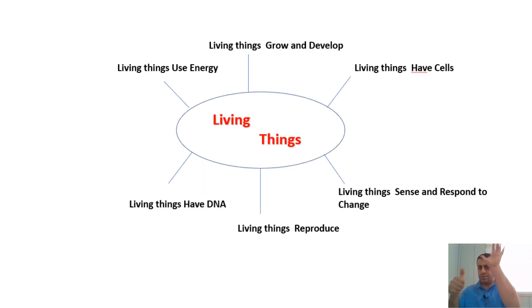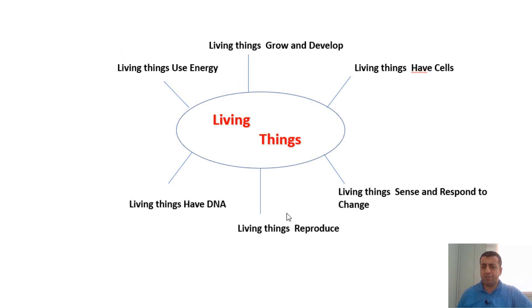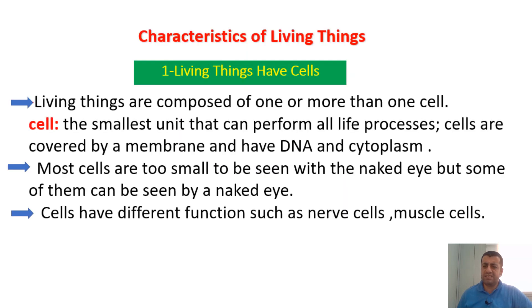There are six characteristics of living things. First: all living things have cells. All living things have DNA. All living things use energy. All living things reproduce. All living things sense and respond to change. And all living things grow and develop.